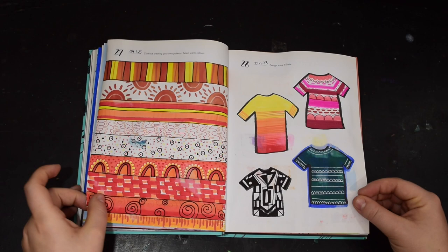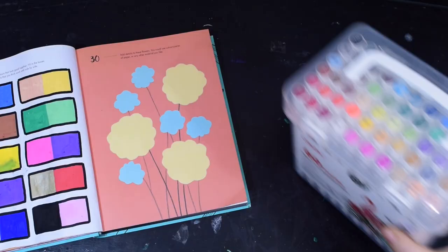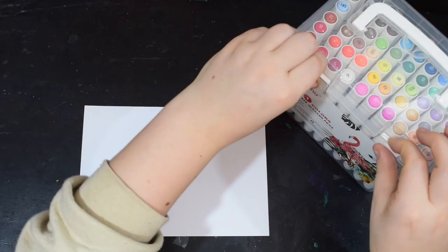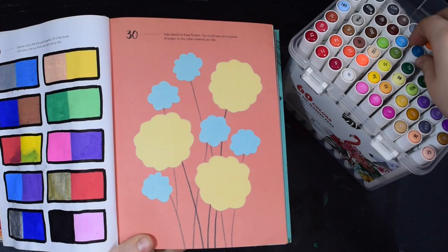So these are the prompts that I've been doing this week and we're now on day 30 which is add details to these flowers. You could use cut out pieces of paper or any other materials you like.